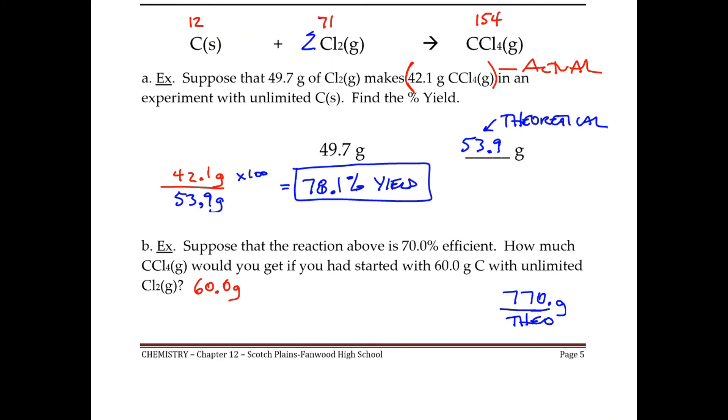However, this is telling us that we're only 70% efficient. We're only going to get 70% of what we need. So you could just take 70% of 770, and that's going to tell you that you would have made 539 grams of CCl4, and that's going to be the actual.